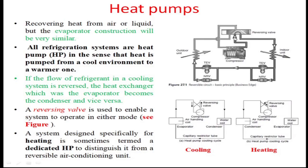When the reversing valve is in the shown direction, the compressor is discharging high temperature, high pressure refrigerant to the indoor unit, rejecting heat to the indoor unit. In this case it is acting as a heat pump — heating the conditioned space. Then the refrigerant goes through the NRV and via the thermostatic expansion valve (TEV) to the outdoor unit.